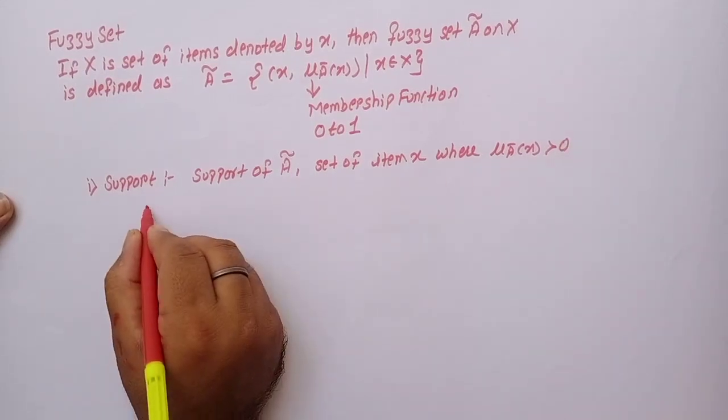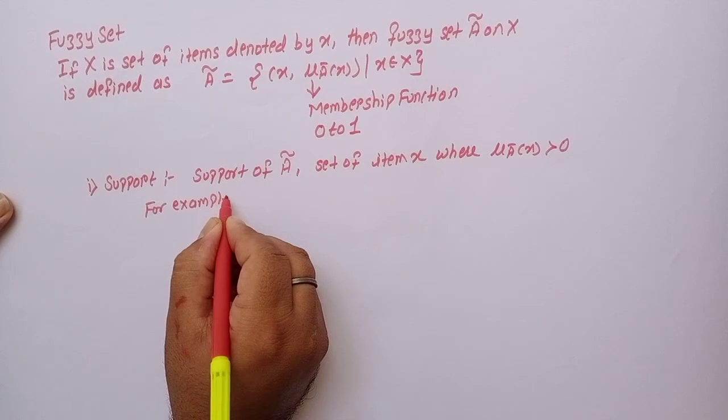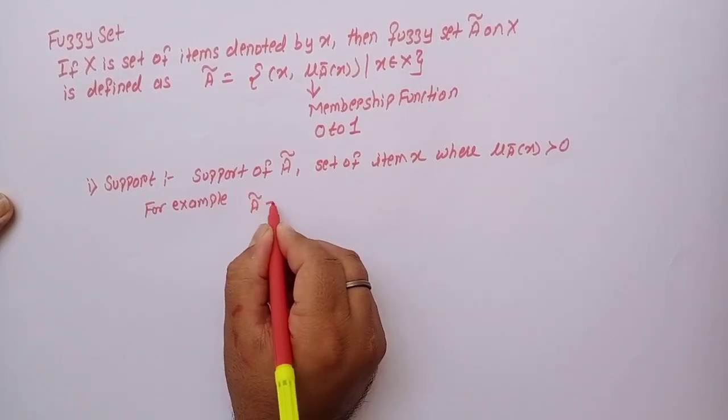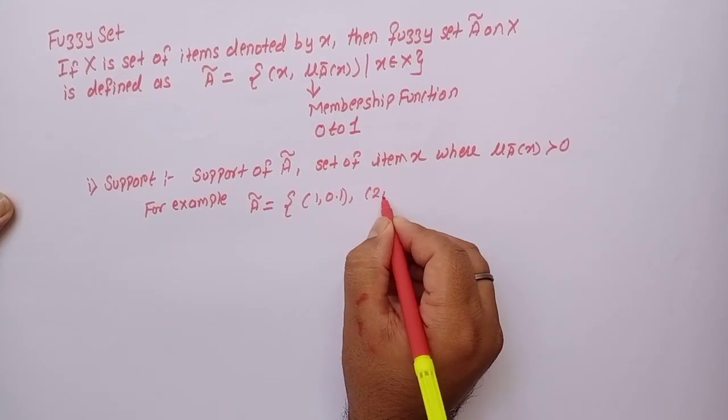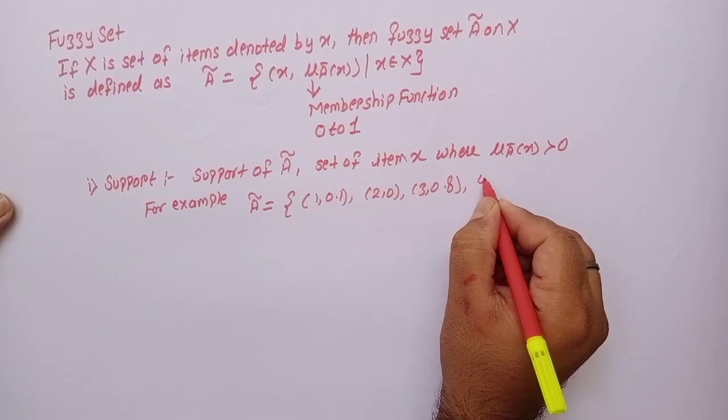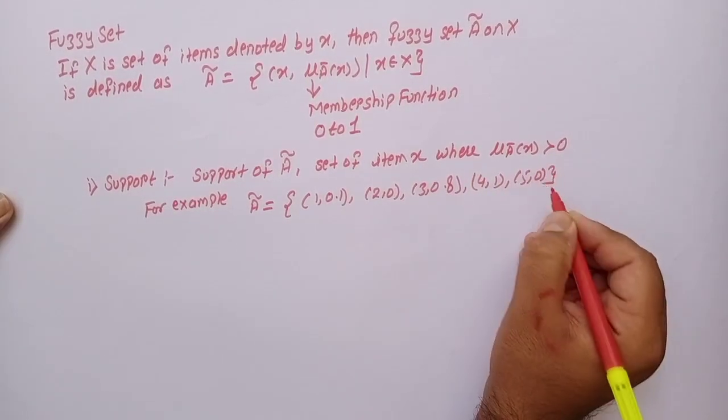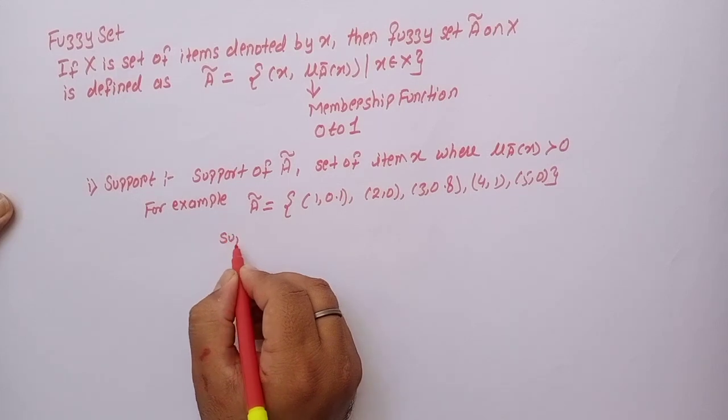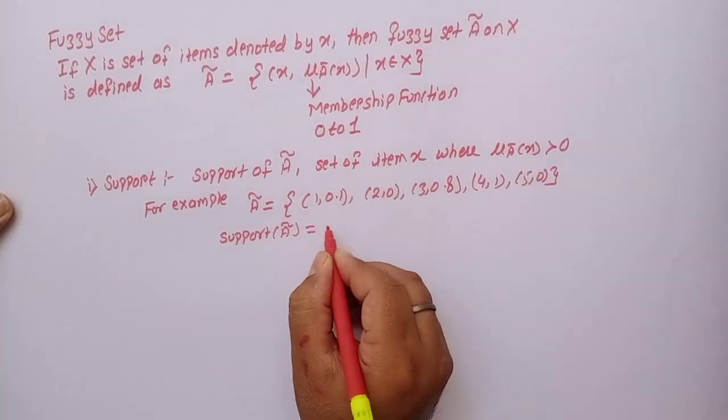For example, say fuzzy set A equals {(1, 0.1), (2, 0), (3, 0.8), (4, 1), (5, 0)}. Then support of A will be equal to {1, 3, 4}.